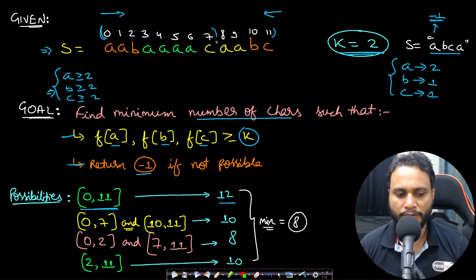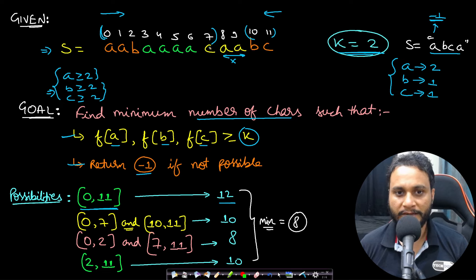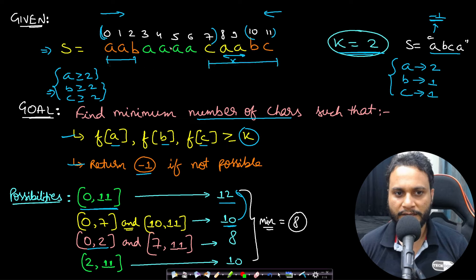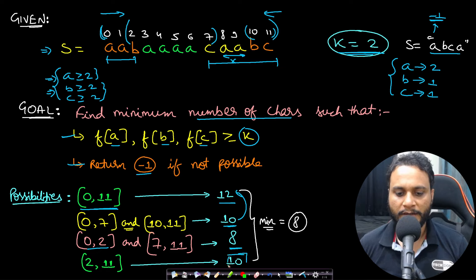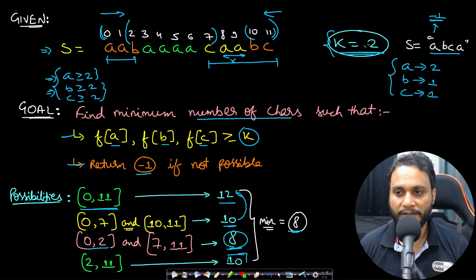For example, choosing indices 0–7 and 10–11 (removing indices 8 and 9) still satisfies the frequency constraint and gives a size of 10. Another option — indices 0–2 and 7–11 — gives size 8 and still satisfies the constraint. We could also include 2–11 for size 10. Out of all valid possibilities we take the one with the shortest length, so 8 is the answer.